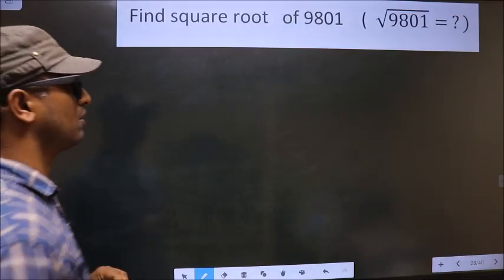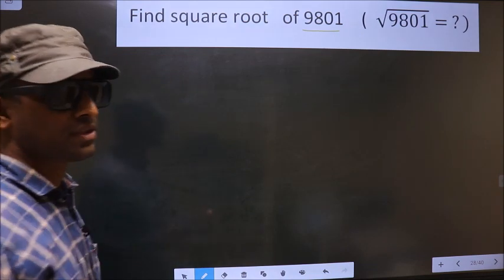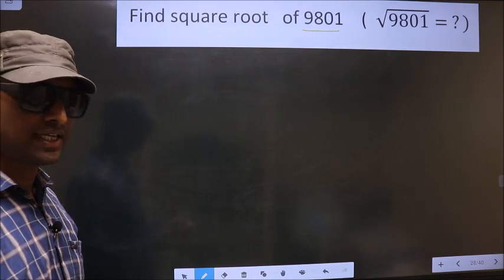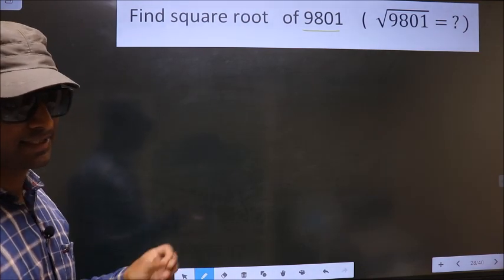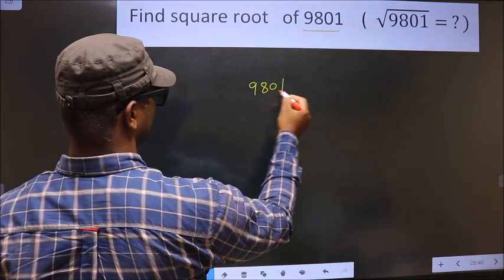Find square root of 9801. To find the square root by long division method, first we have to frame it in this way: 9, 8, 0, 1.